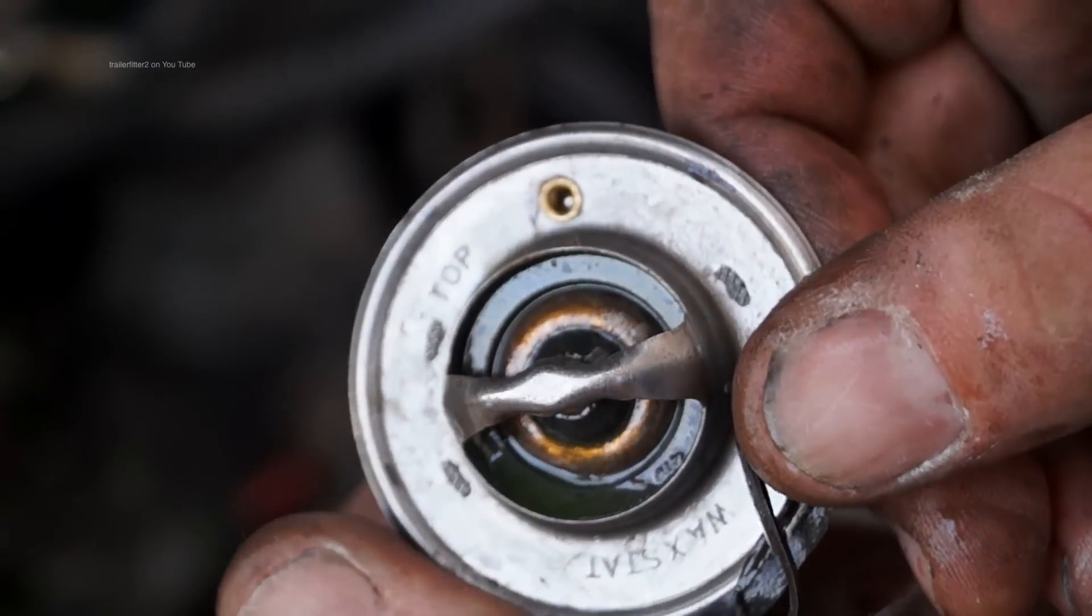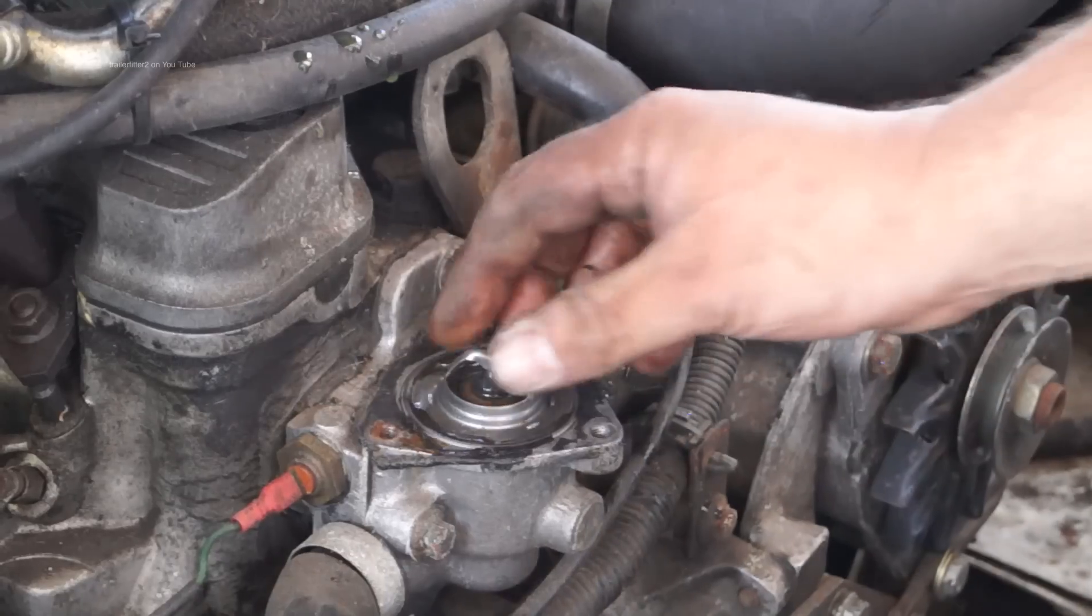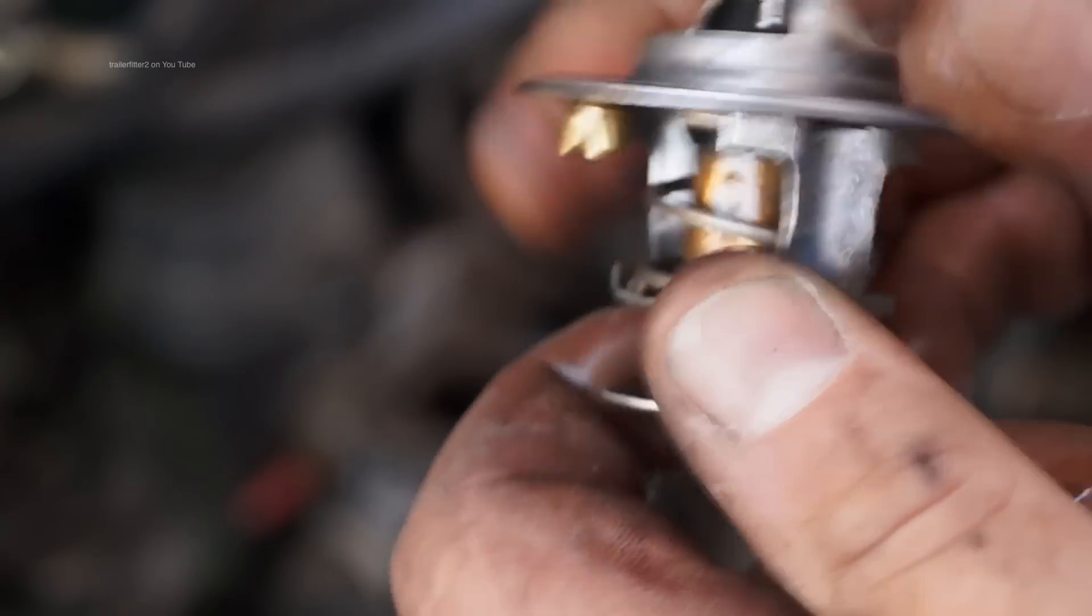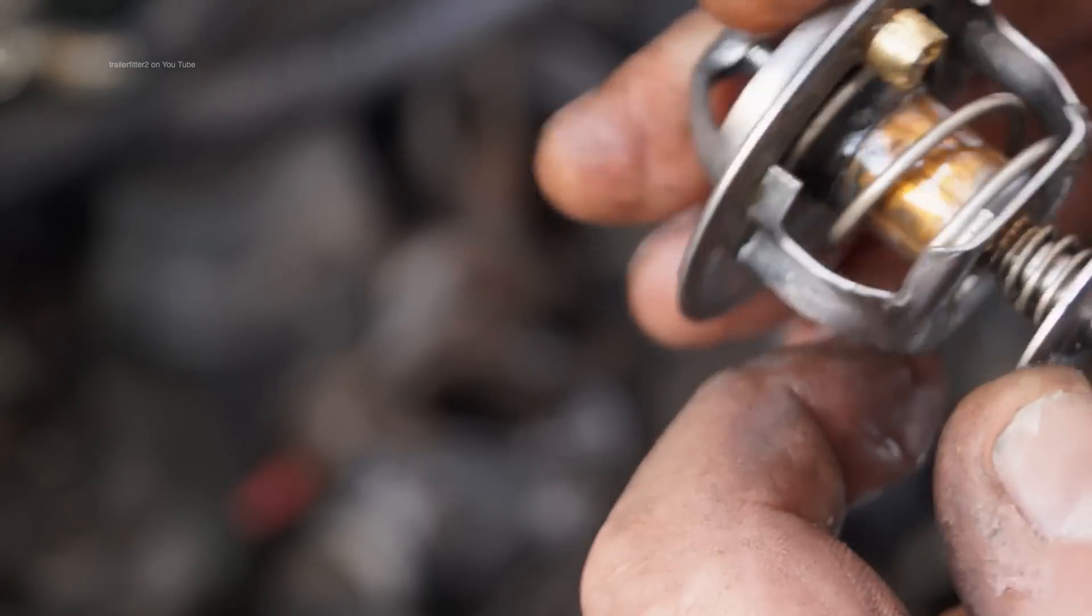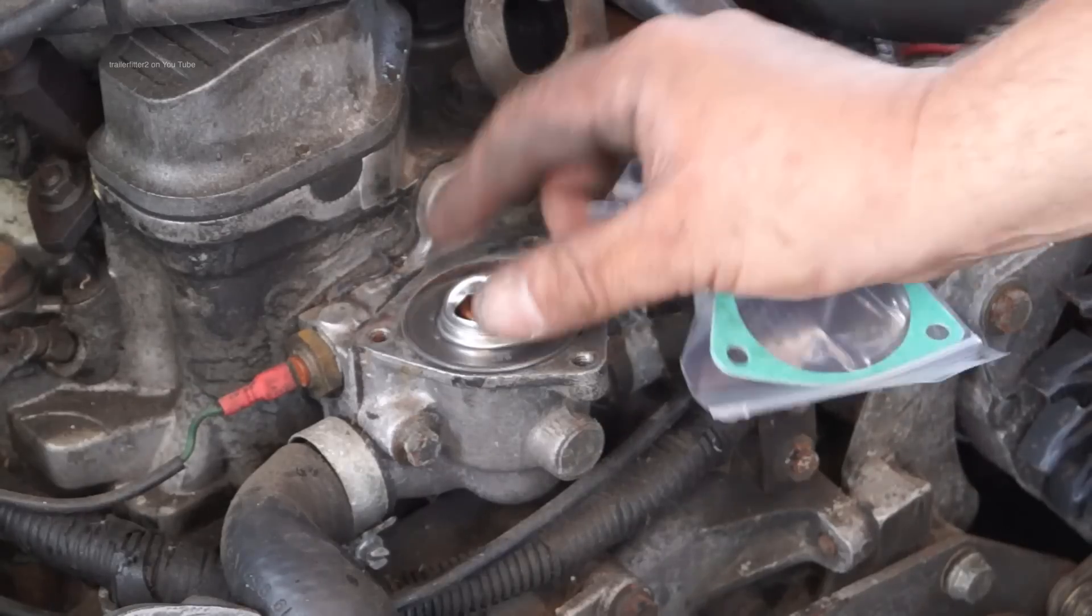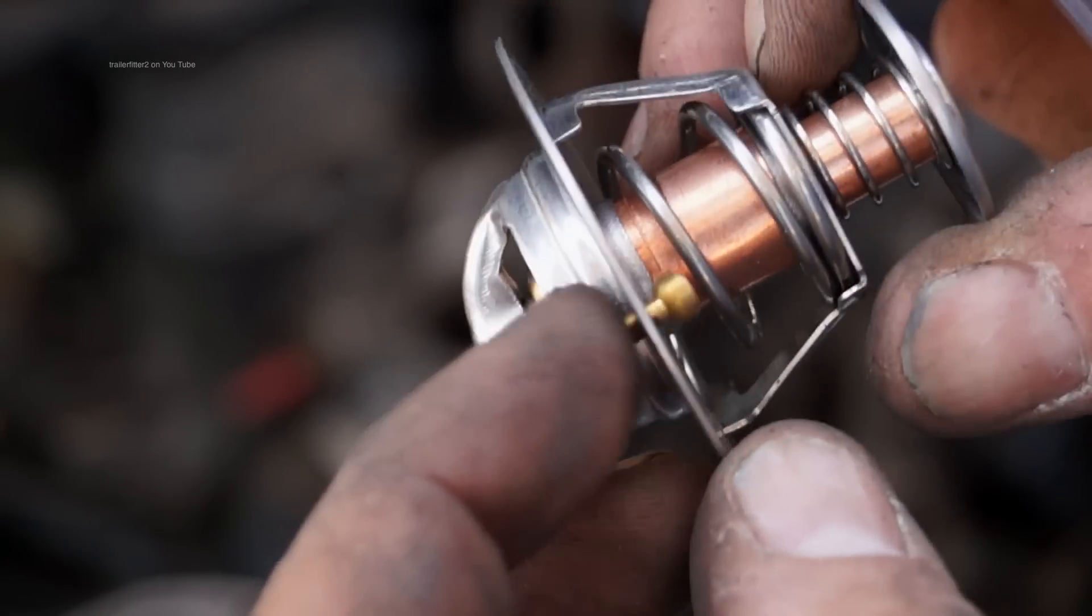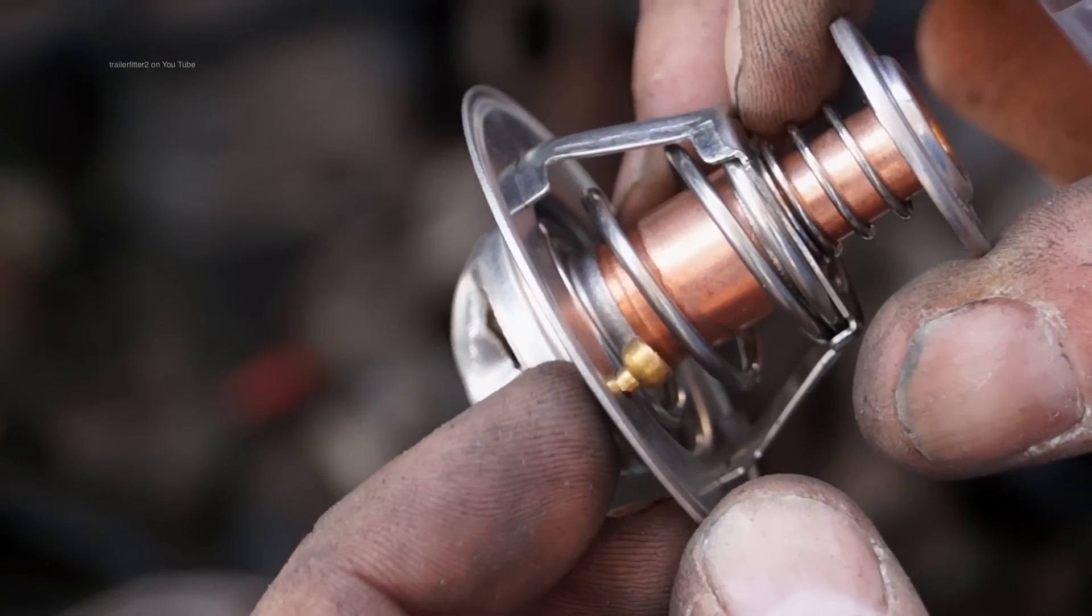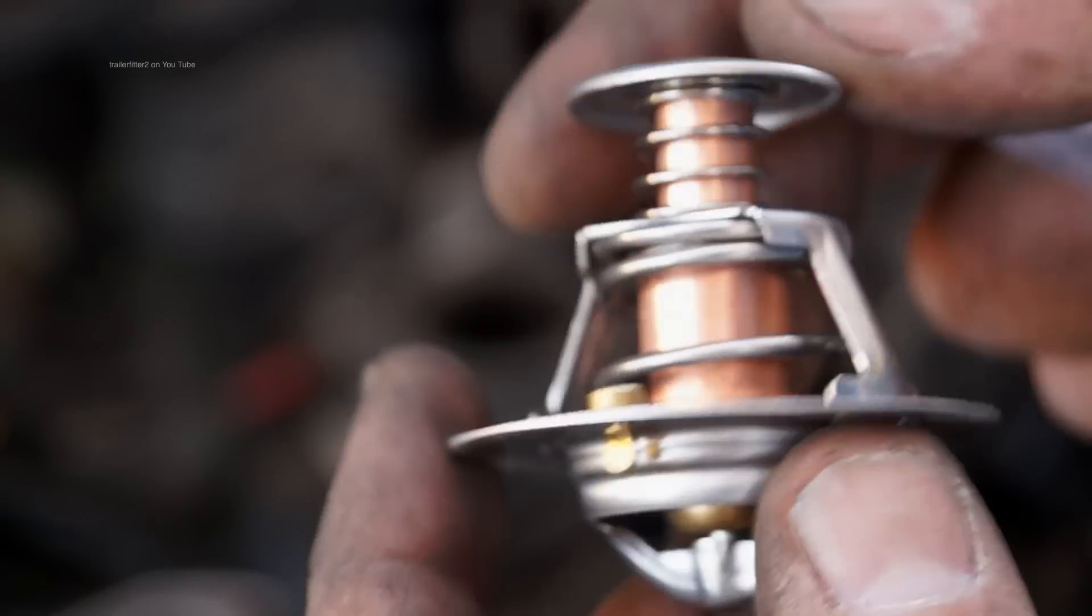Now this does not count for all thermostats. In this case, this is an 88 degree wax stat which is out of the 200 TDI engine, which also is relevant to the 300 TDI engine. One of the components on this is the jiggle pin here which lets air out when you're bleeding the system.